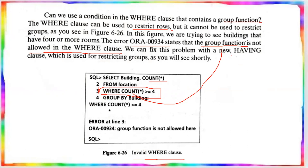The solution is to use the HAVING clause. The HAVING clause is used when a group function restriction is needed — for example, where a column aggregate is not allowed in the WHERE clause, we use HAVING instead.